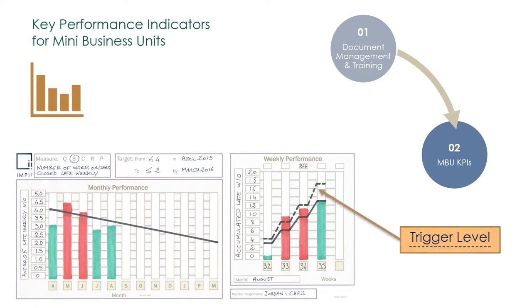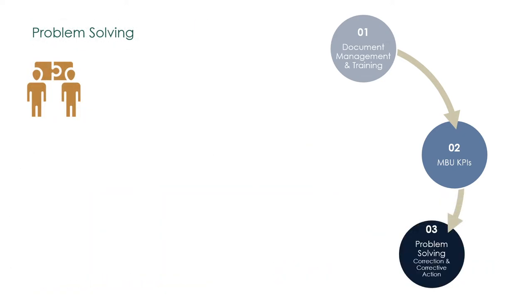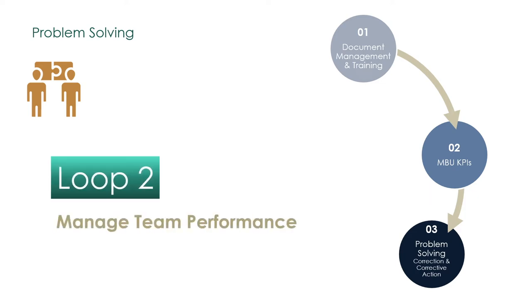With standards and triggers, we can see problems and manage them. A short interval KPI triggered a problem that needs solving, as we briefly explained in Loop 2. Let's add some colours to our explanation.